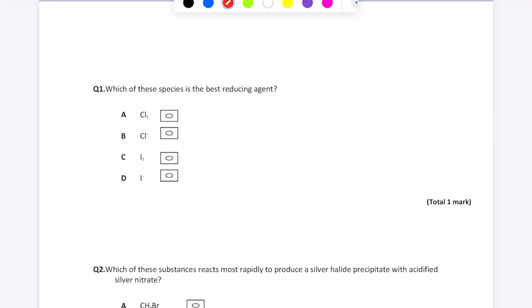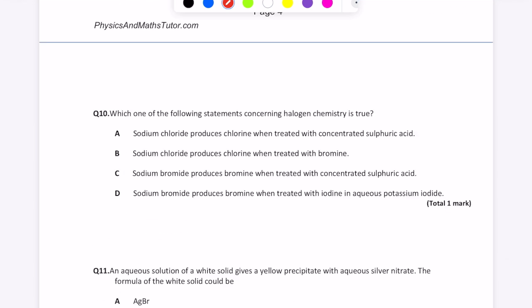Question one, which of these species is the best reducing agent? So two things to notice. First of all, we need a halide ion, not the halogen. And second of all, we want the element which appears lowest in group seven. So that will therefore be the iodide ion, I minus.